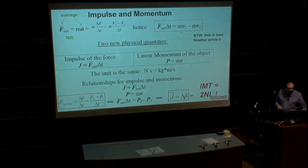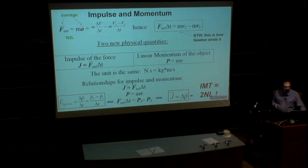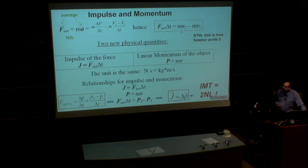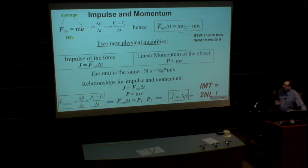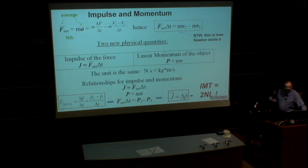This is our current topic. This slide summarizes everything we said yesterday about new physical quantities which are most convenient to use when we talk about collisions. This is basically Newton's second law, but written differently — in a different form. It's like the same person watched from a different perspective.